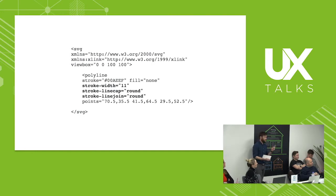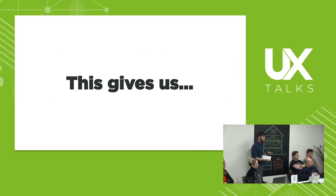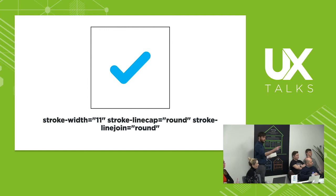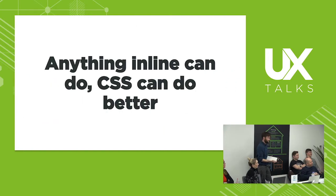The stroke width is 11 — and there are still no pixels. It's 11 of whatever size the viewBox is, so it's 11 out of 100. We give the stroke-linecap and stroke-linejoin 'round' so the ends are rounded. Sorted.